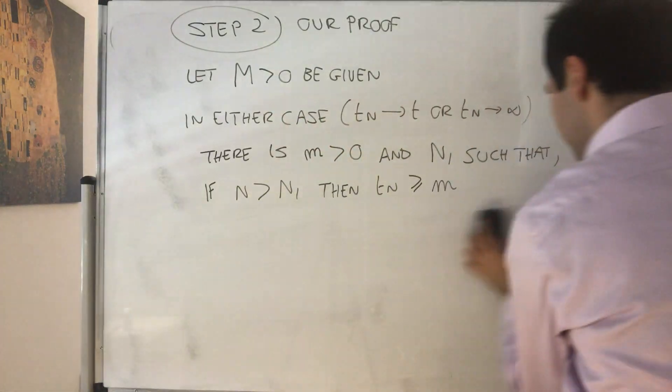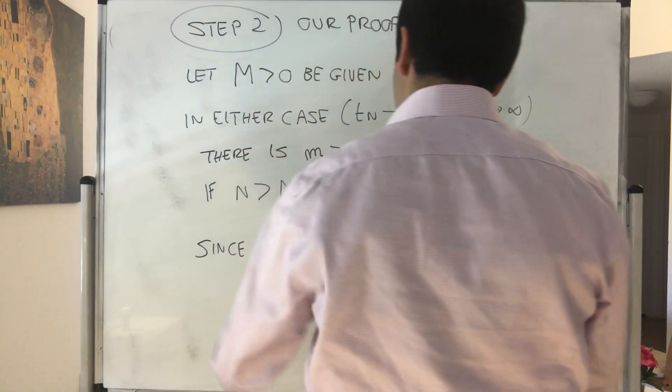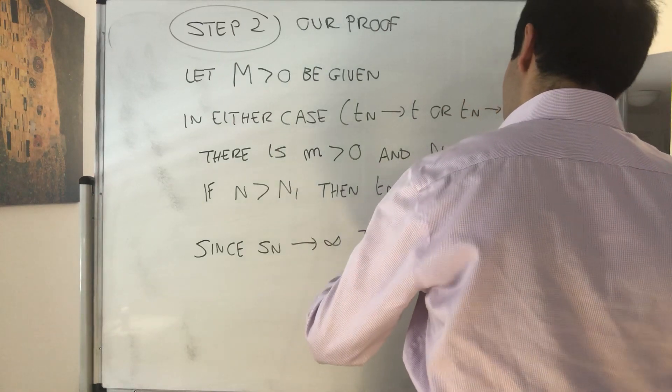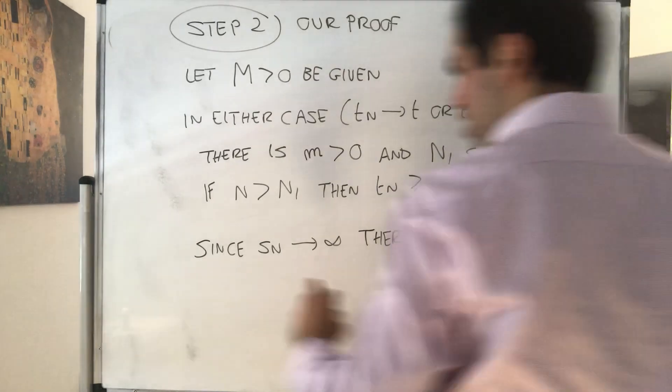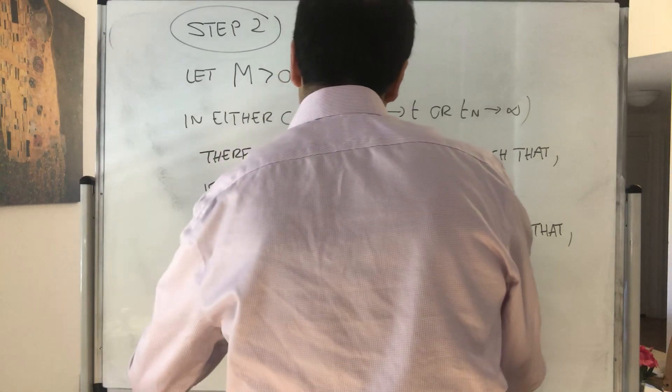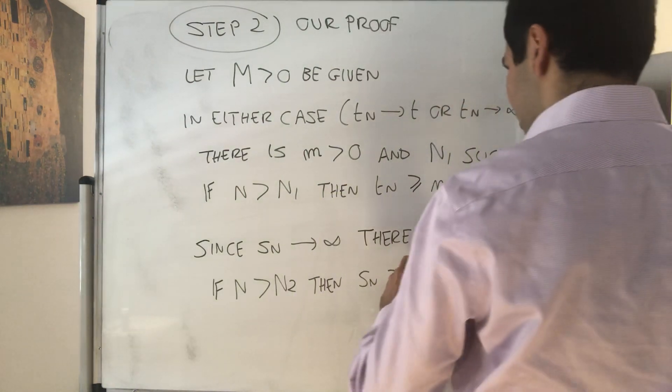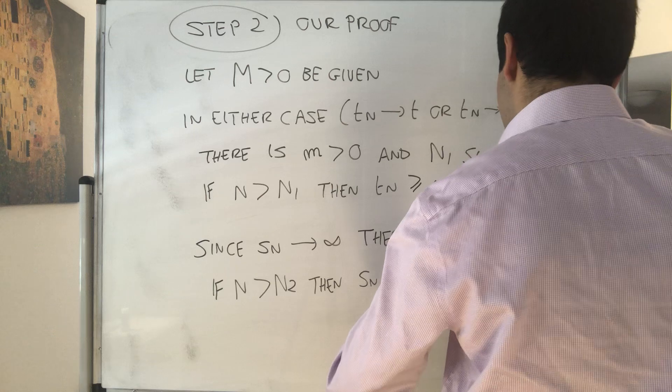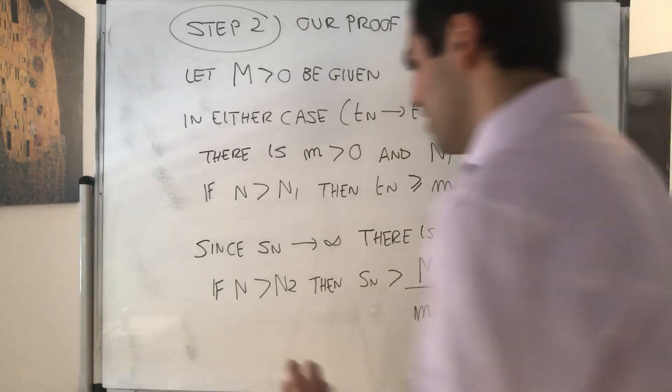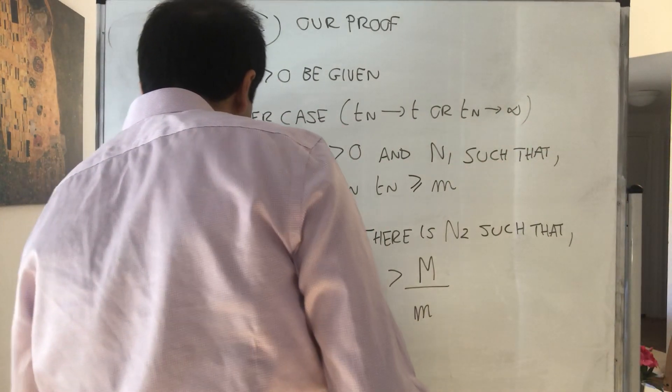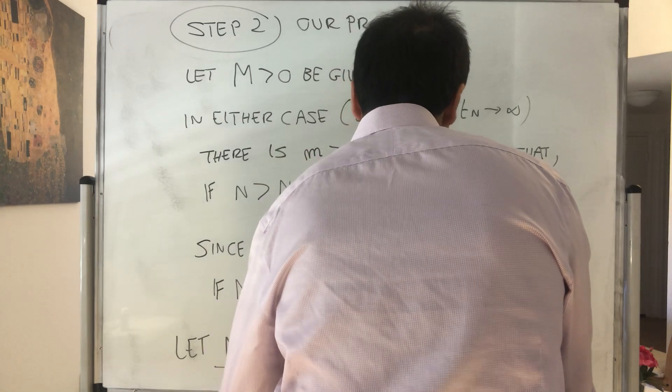And, moreover, since Sn goes to infinity, we know that there is n2, such that if n is bigger than n2, then Sn is bigger than M over m. Again, that's true, a positive number, so we know eventually Sn is bigger than that. And now, simply let capital N be the bigger one of n1 and n2, because we want both things to happen.